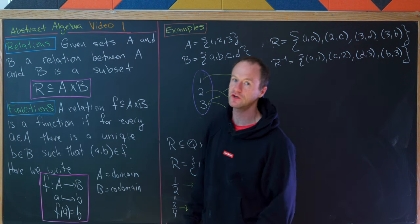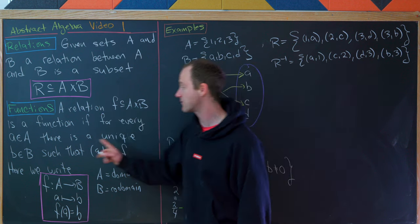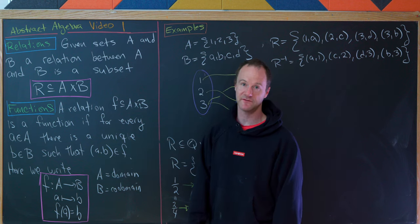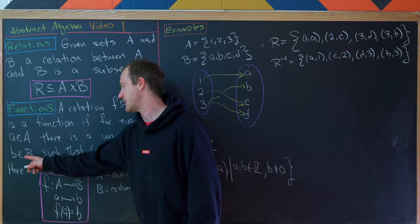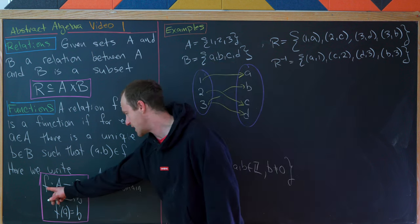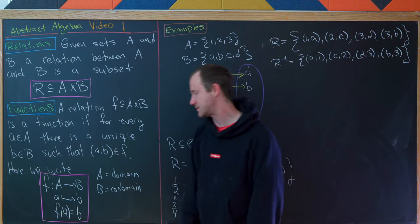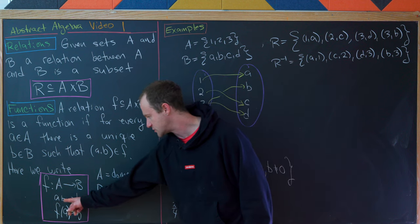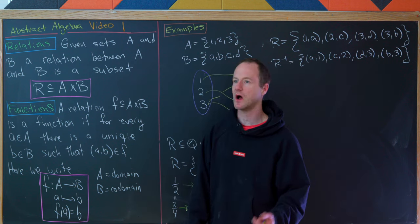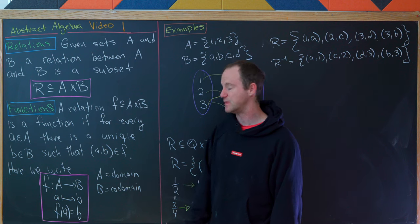Let's recall the precise definition of a function in terms of a relation. A relation f between A and B is a function if for every little a in A, there is a unique little b in B such that the ordered pair (a, b) is in f — in other words, each element of A is mapped to exactly one b. We write f: A → B for the setup, and use the notation a ↦ b or f(a) = b. The set A is called the domain of f and the set B is called the codomain of f.